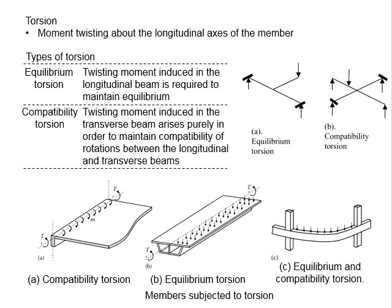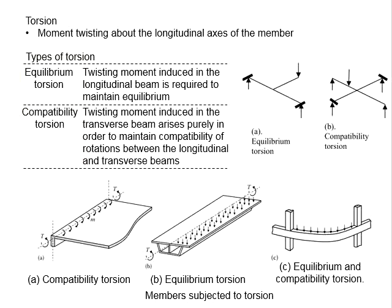Torsion refers to the moment twisting about the longitudinal axis of a member. When a pre-stressed concrete member is subjected to rotational twisting about its longitudinal span, it is known as torsion load. There are two main types of torsions: equilibrium torsions and compatibility torsions.